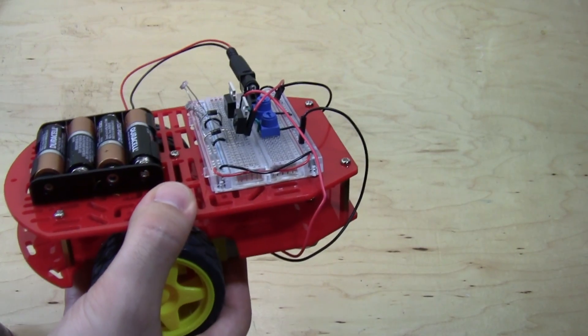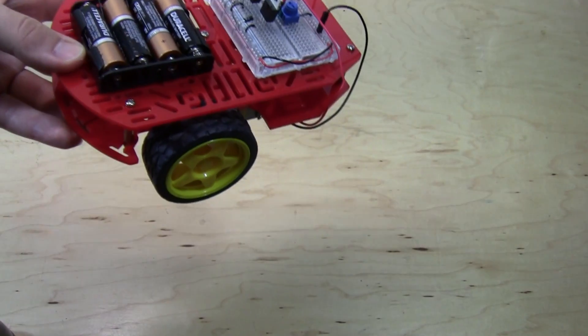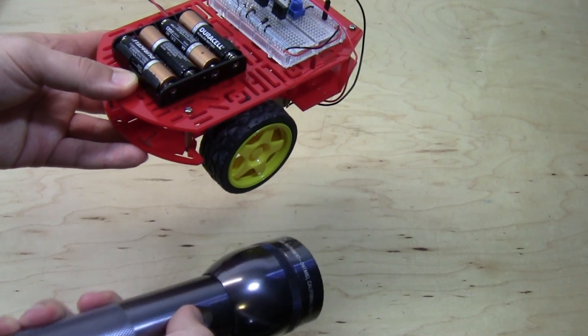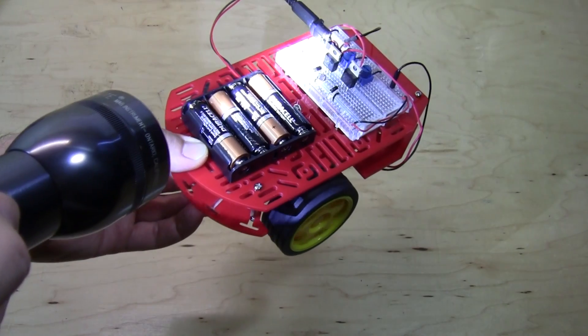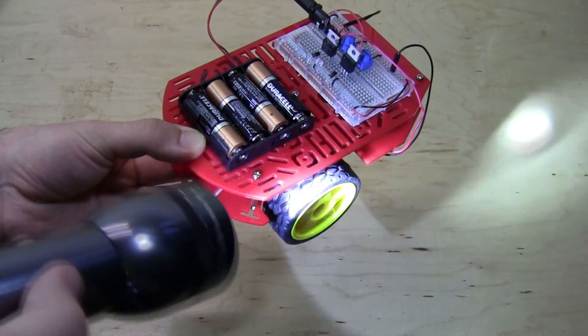What these light sensors do is control the speed of the motors. So when I turn a flashlight on and aim it at the light sensors, you can see and hear that the wheels will start spinning.